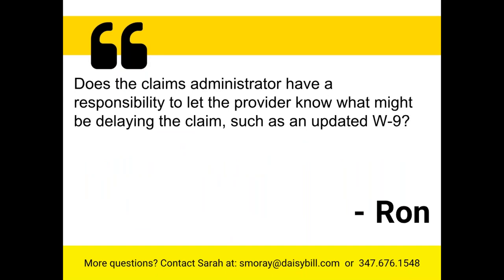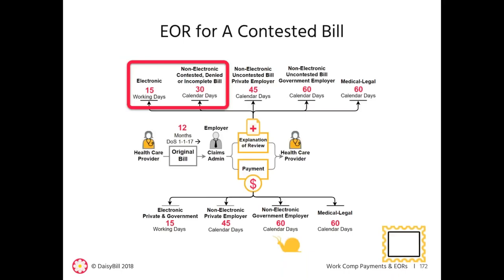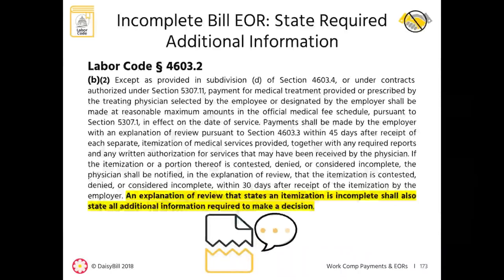Ron asks: does the claims administrator have a responsibility to let a provider know what might be delaying the claim, such as an updated W-9? If your bill is contested and submitted electronically, you must receive an EOR within 15 working days. If submitted on paper, you must receive that EOR within 30 days. Missing a W-9 constitutes an incomplete bill, so the EOR must include that the W-9 is the additional information required to make a decision. So yes, they must tell you that.